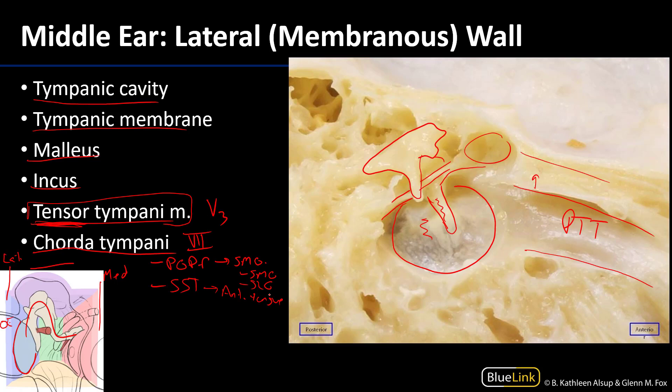Chorda tympani is also carrying special sensory fibers for taste bound for the anterior tongue. So we're seeing it here making its way through the middle ear — we've talked about chorda tympani in the infratemporal fossa, discussing the salivary glands, oral cavity, and submandibular triangle, and now we can see it here early on in its journey.